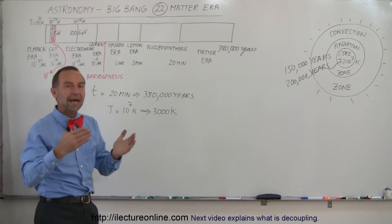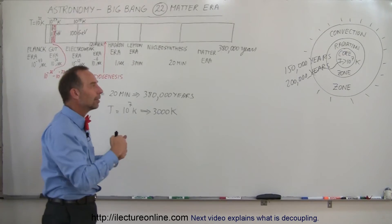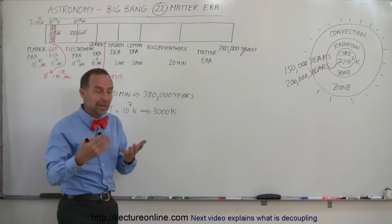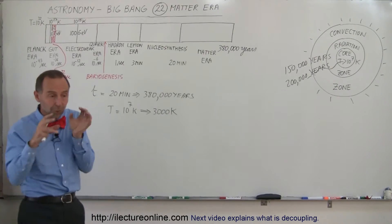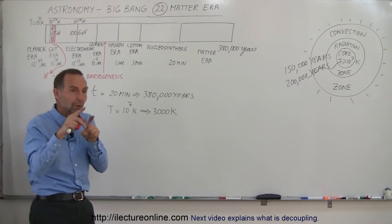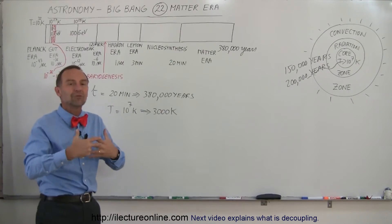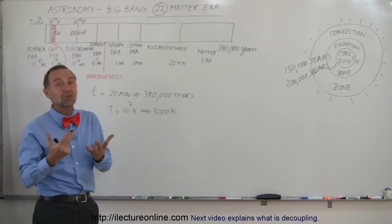And so that's why we call it matter dominated or the matter era, because the radiation, the background radiation that we see today which was locked inside the universe and couldn't go anywhere was simply not able to move around as radiation normally does.